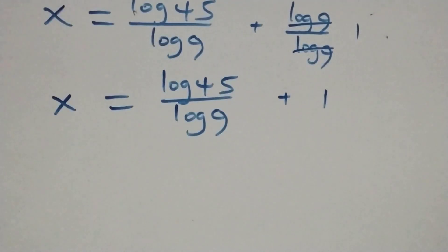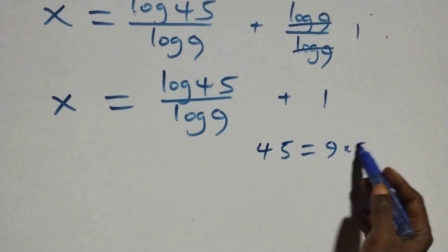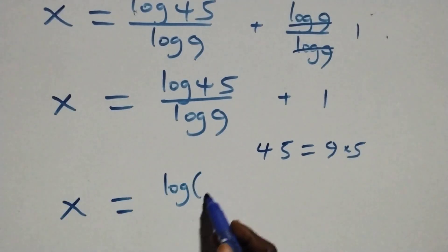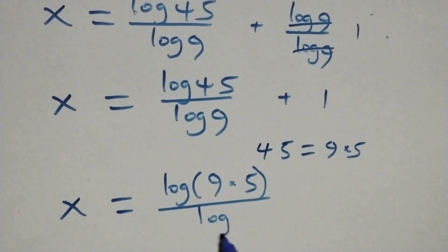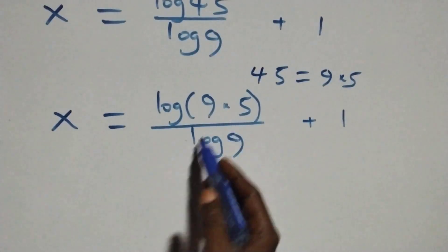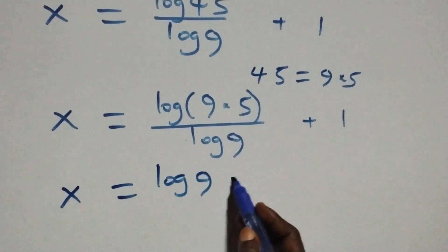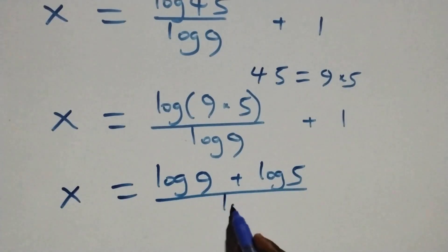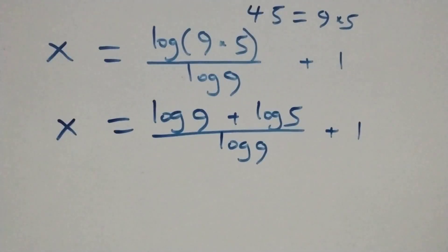The next step: 45 can be written as 9 times 5, so what we have becomes x equals log(9 × 5) over log 9 plus 1. Applying the product rule again: x equals log 9 plus log 5 over log 9 plus 1.